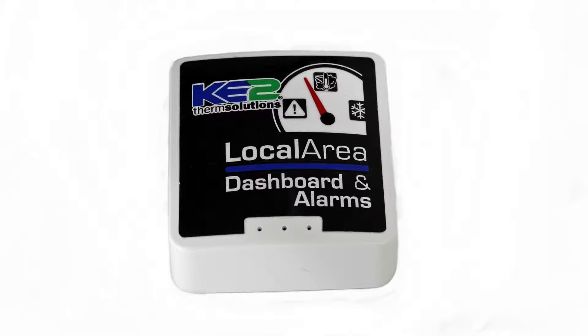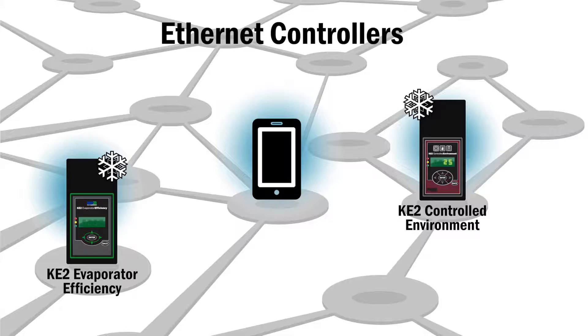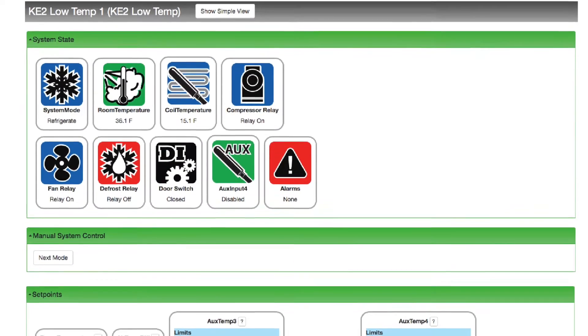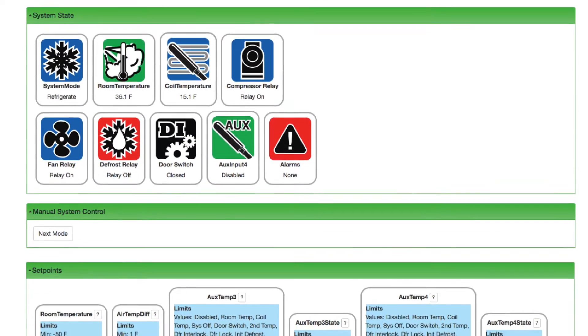The Key2 Local Area Dashboard and Alarms is a huge leap forward, providing the ability to remotely monitor and control Ethernet controls like the Key2Evap or serial Modbus controllers like the Key2Temp and Key2LowTemp, all in real time.